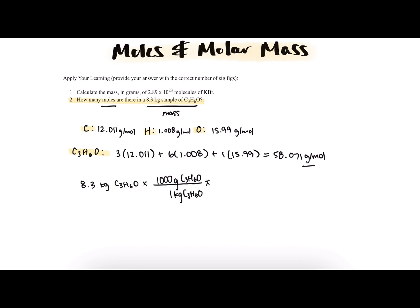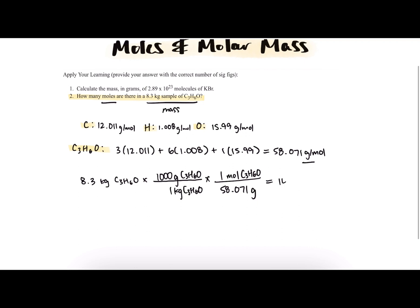Then once we have grams, we can multiply by our molar mass to see how many moles we have. So 1 mole of C3H6O is equivalent to 58.071 grams. So when we multiply across and then divide by the molar mass, we find that there are 140 moles of C3H6O.